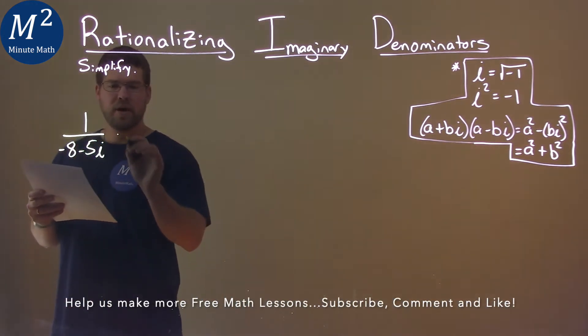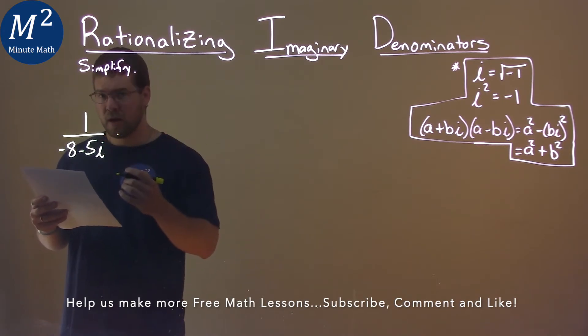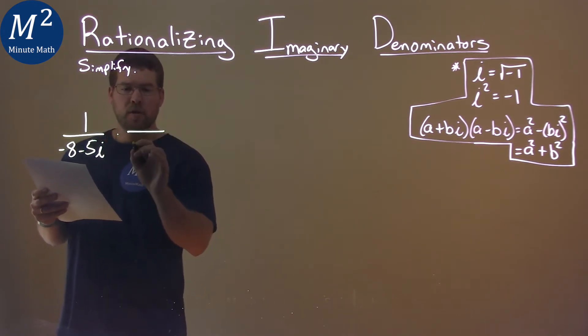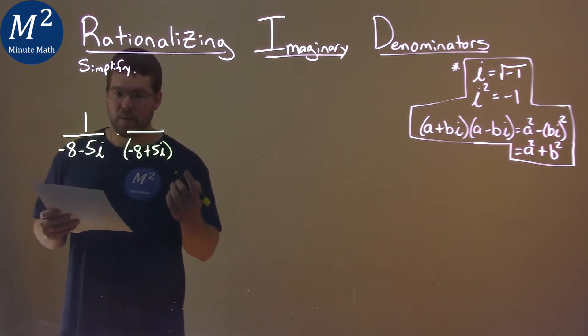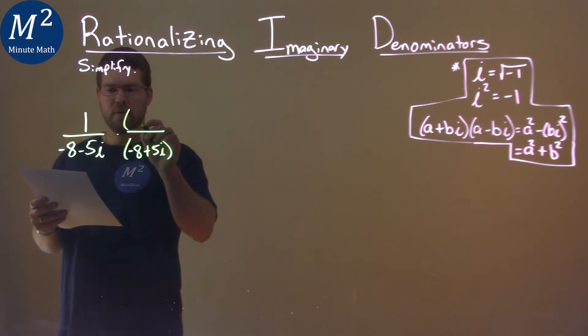I want to multiply this by the denominator's complex conjugate. So, denominator negative 8, and we're going to put a plus 5i. That's a complex conjugate, and keep that in the numerator, negative 8 plus 5i.